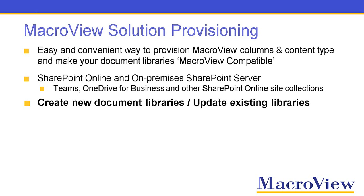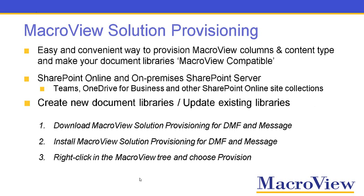You can create new document libraries that are MacroReview compatible or update existing libraries to make them compatible. Step one is to download the MacroReview Solution Provisioning for DMF and Message from the MacroReview Help Center, then install that extension on your PC, and then you can right-click in the MacroReview tree and choose Provision.